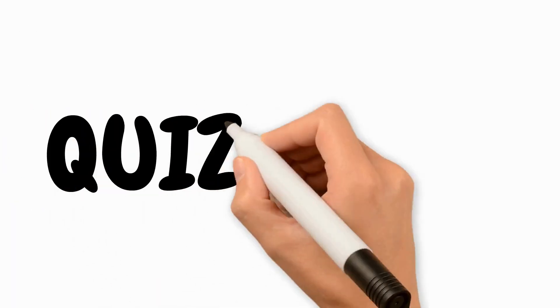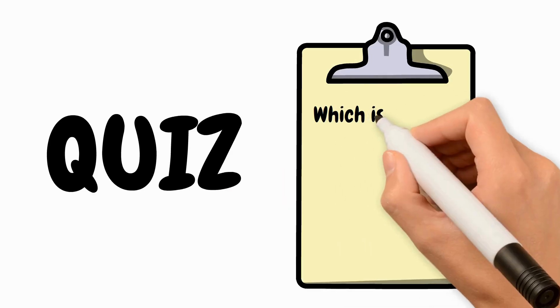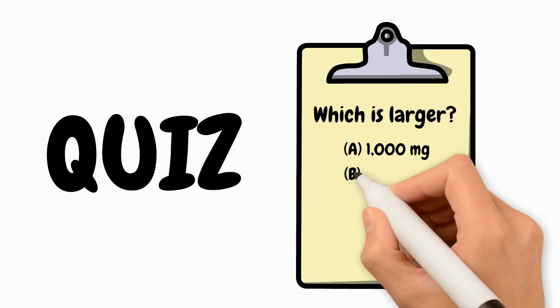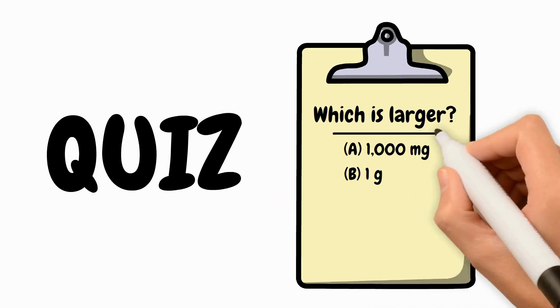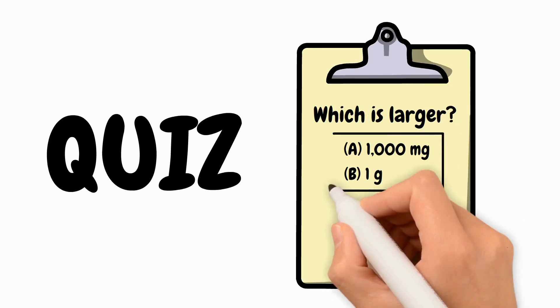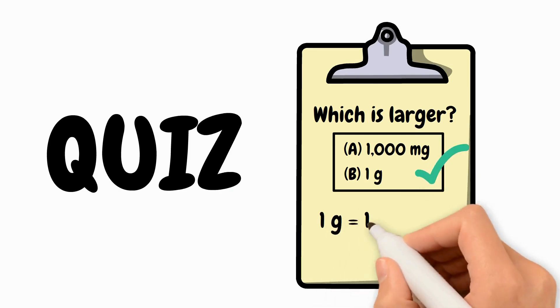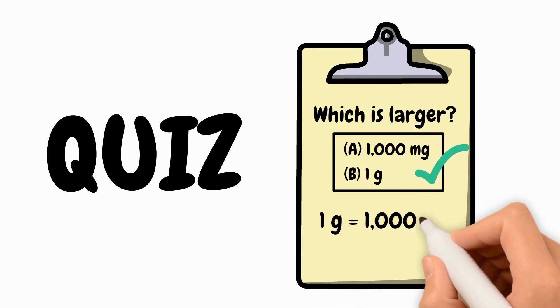Quick check: which is larger — 1,000 milligrams or 1 gram? If you said they're the same, you're right. 1 gram equals 1,000 milligrams.